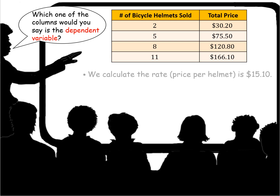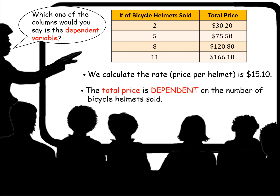Now look at this table. Which one of the columns would you say is the dependent variable? What values depend on the other values — on the independent values? We calculate the rate: the price per helmet ends up being $15.10, because you have two helmets sold at $30.20 for a total price. If I divide that in half, I get $15.10. If I multiply $15.10 times 5, I get $75.50, and so on. The rate is the same — $15.10 per helmet. So the total price is dependent on the number of bicycle helmets sold.